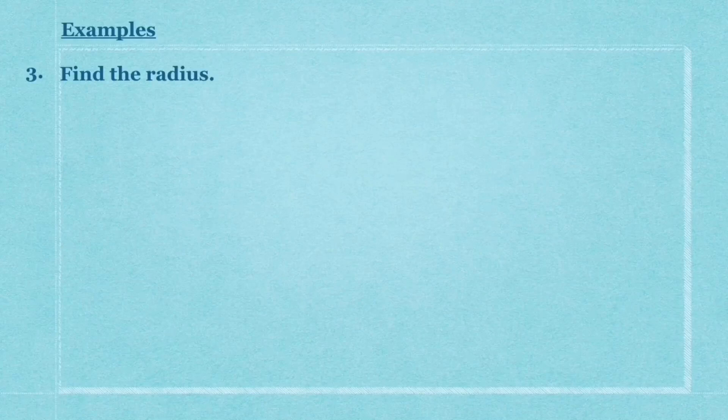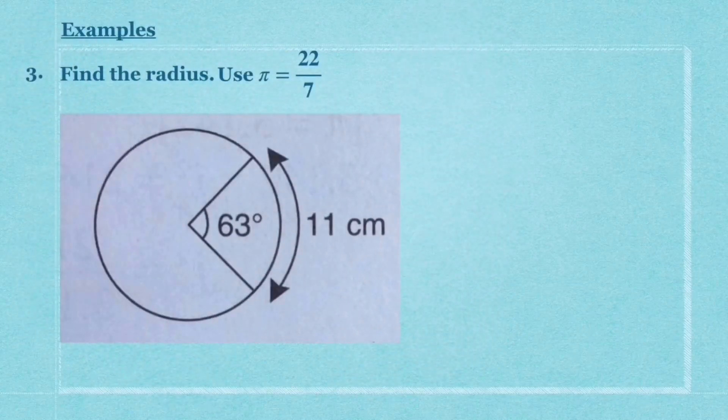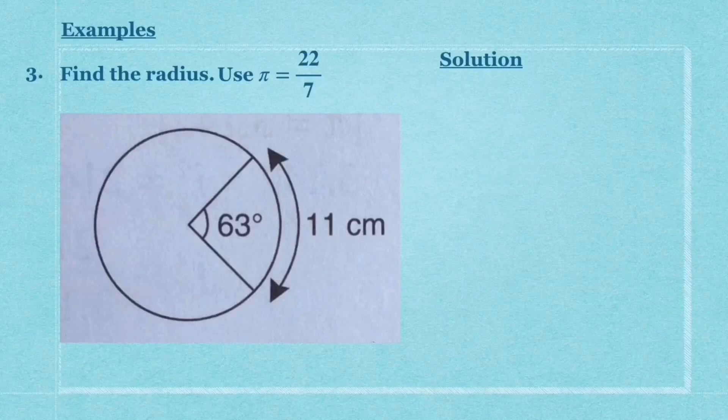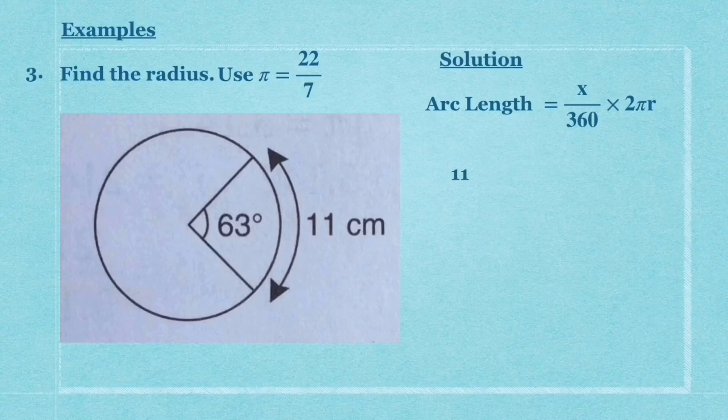Now this is example number three. In this example, you need to find the radius using π = 22/7. Look at your diagram here. You've got arc length = 11 cm and the angle inside is 63 degrees. Just substitute the values: 11 = 63/360 × 2 × π × r.